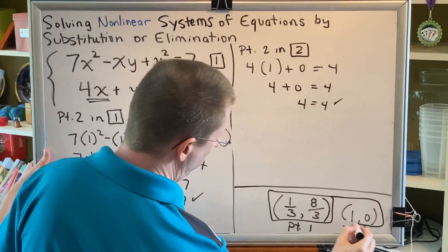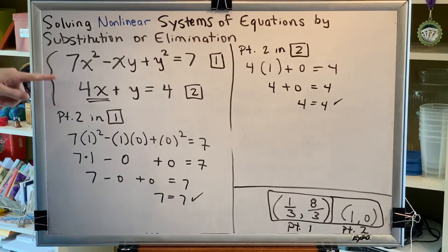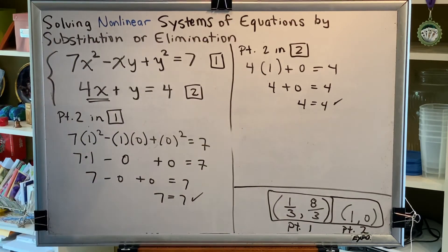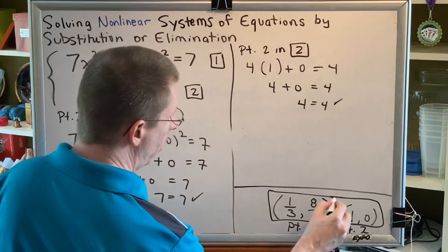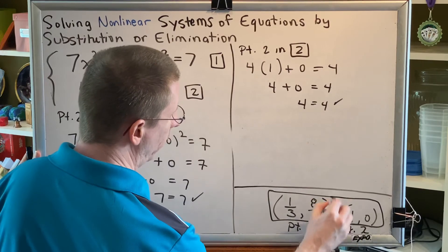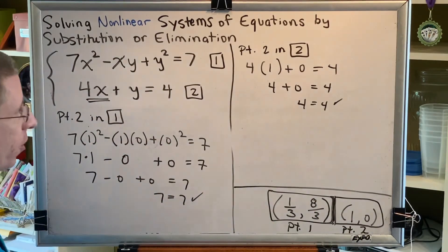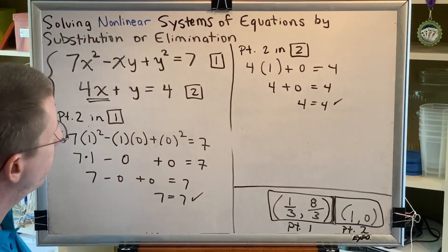So that tells me that this point is a solution of equation one and equation two, and therefore is a solution of the system. There are two points in our final answer, one-third comma eight-thirds and one comma zero.